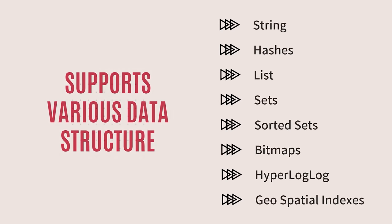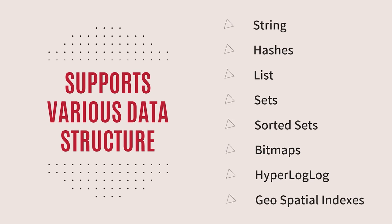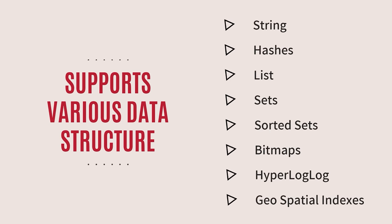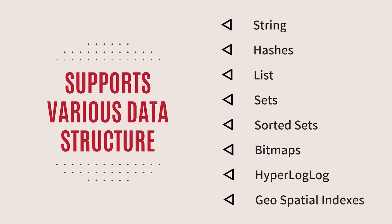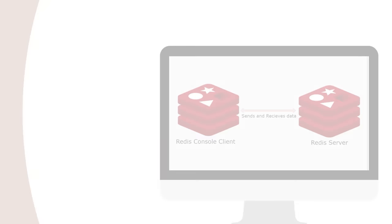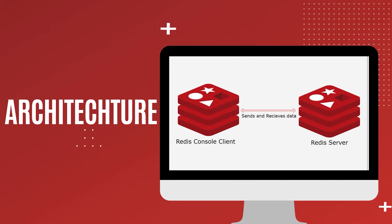Redis supports various data structures such as strings, hashes, sets, lists, sorted sets, bitmaps, hyperlog logs, and geospatial indexes. Talking about the architecture, there are two main processes in the Redis architecture.